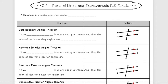Now we're going to learn about some properties of them when they're with parallel lines. First, a definition we need to know: a theorem is a statement that can be proven. We also have postulates — those are ones that we don't have to prove, they're just given — and we have definitions. A theorem, however, is one that we can actually do a proof for.